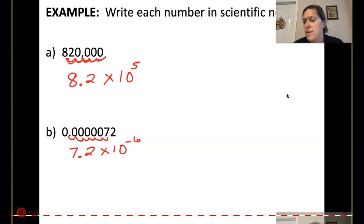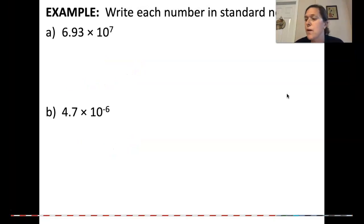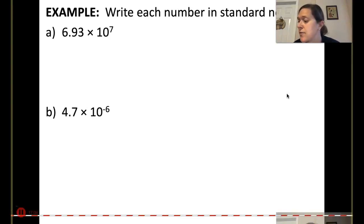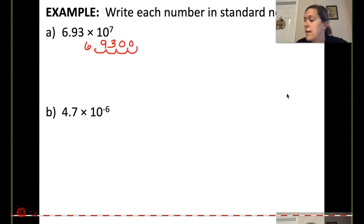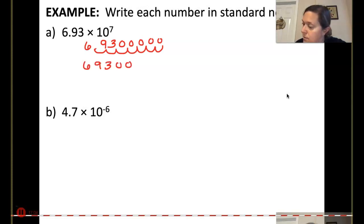Now if we do it in reverse, we have 6.93 times 10 to the 7th. How do we turn that into an actual number? Well, 6.93 is a pretty small number and I need to get bigger, so I'm going to move my decimal seven places to the right, adding zeros as needed. That gives me 69,300,000.